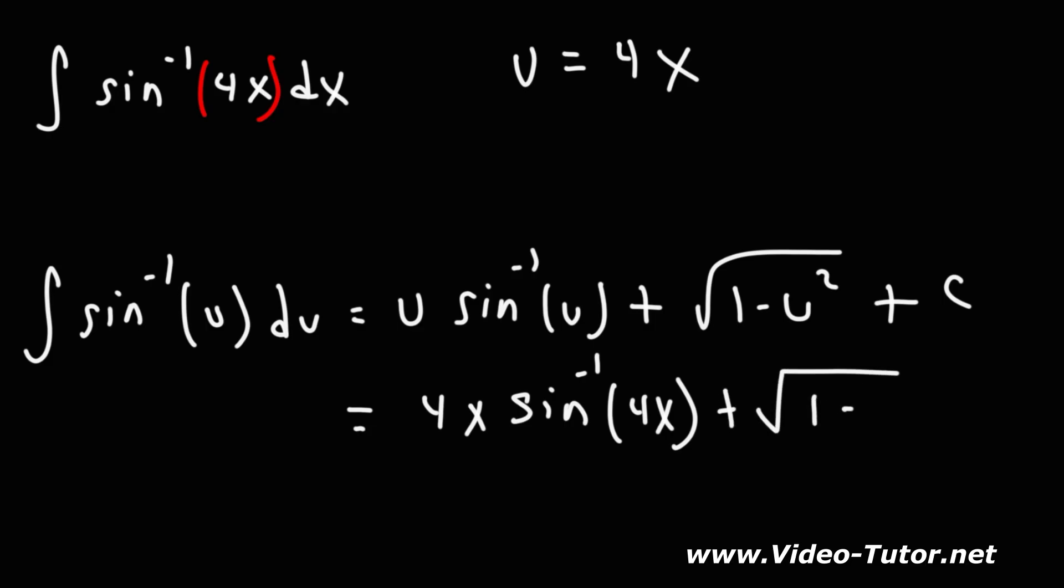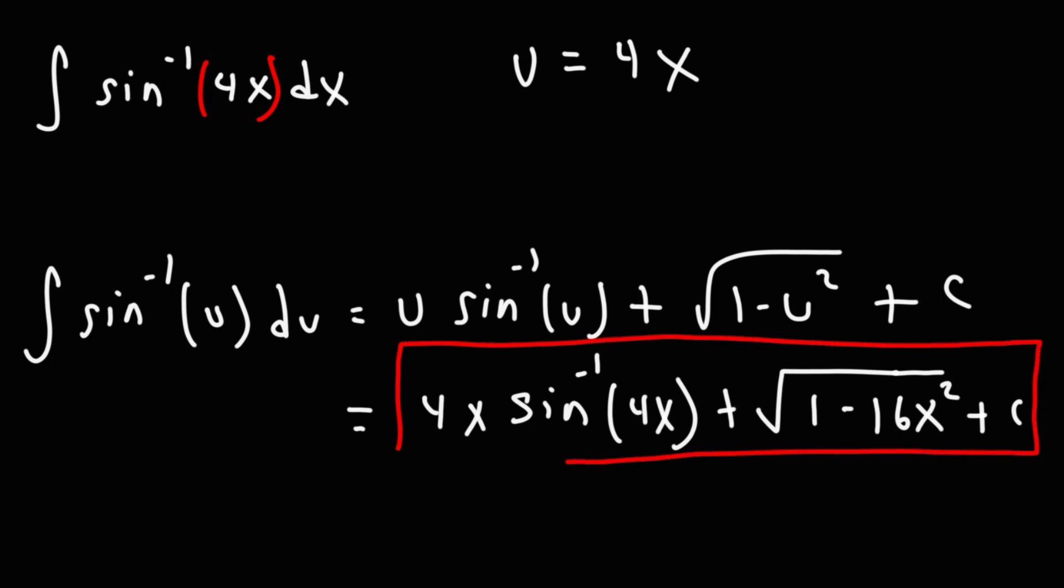Now, u squared, 4x squared, if you multiply 4x by 4x, it will give you 16x squared. So this is going to be the answer for the first problem.